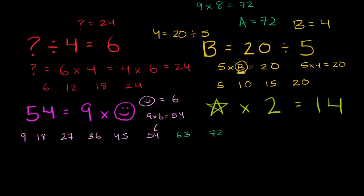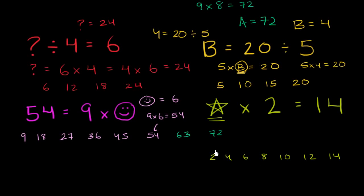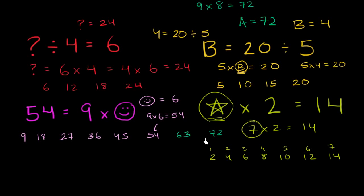Now we have one last one. Star times 2 is equal to 14. So what times 2 is equal to 14? Let's just look at our multiples of 2. 2 times 1 is 2, then 4, 6, 8, 10, 12, 14. So how many times do we have to multiply 2 to get to 14? That's 1, 2, 3, 4, 5, 6, 7 — 2 times 7 is 14. So if I wrote 7 times 2 is equal to 14, this is absolutely true. So star must be equal to 7.